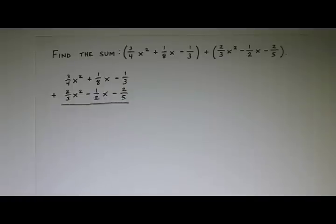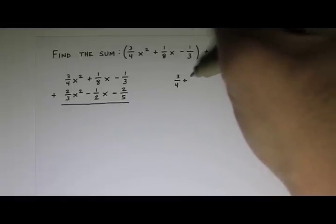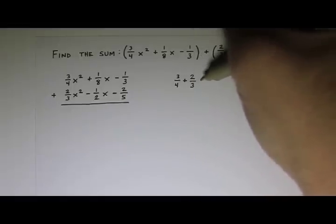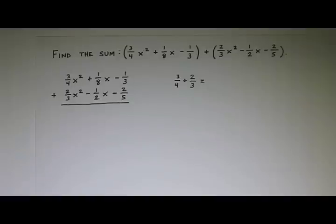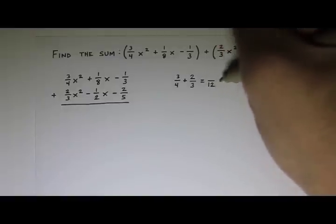So for instance, this first one, I want to add 3/4 + 2/3. And remember when you add fractions, they have to have a common denominator. So we got a 4, we got a 3. I'm thinking 12 sounds like a good common denominator. So we're going to have something under 12 plus something under 12.